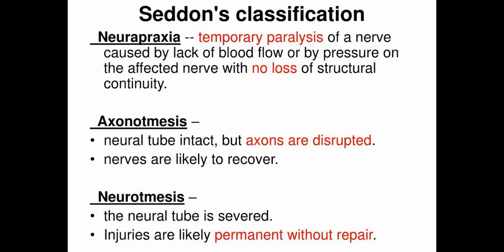Neuropraxia is a temporary paralysis of a nerve caused by a lack of blood flow or by pressure on the affected nerve, with no loss of structural continuity. Axonotmesis is when the neural tube is intact but axons are disrupted; nerves are likely to recover. Neurotmesis is when the neural tube is severed and injuries are likely permanent without surgical repair.